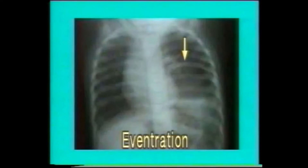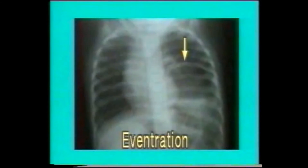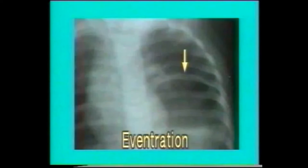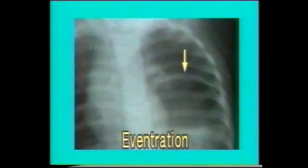In contrast, eventration of the diaphragm is a developmental weakness, or weakness due to birth injury to the phrenic nerve, where the hemidiaphragm — usually the left — is weak and raised. Note in this typical X-ray of eventration the smooth round outline of the diaphragm with the stomach bubble under it.